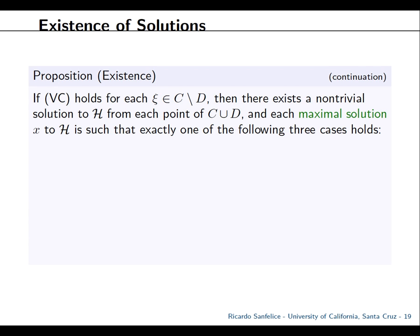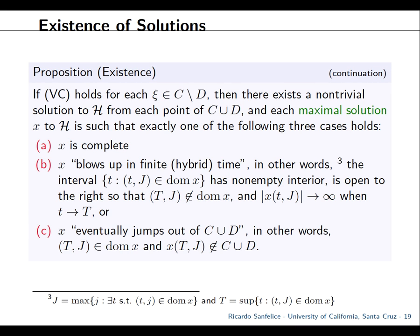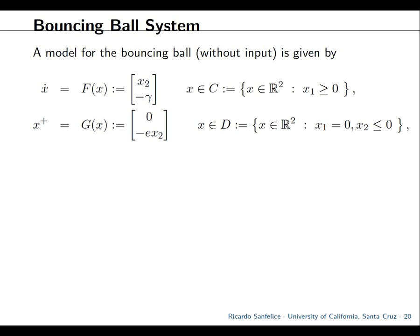If the viability condition (DC) holds for every point in C minus D, then there exists a solution for every point in C∪D, because from D you can always jump. Each maximal solution will satisfy one of: it's complete with domain unbounded in t or j; it blows up to infinity in finite time (finite escape time); or it jumps outside of C∪D. You can rule out the last case by ensuring G maps back appropriately, and show no finite escape time, giving completeness.